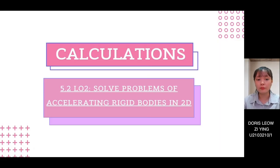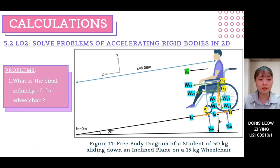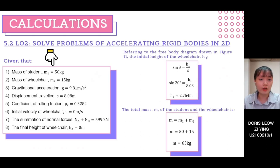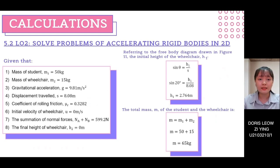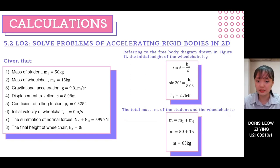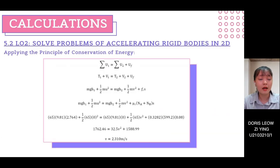Moving on to LO2, which is solving problems of accelerating rigid bodies in 2D, the problem is finding the final velocity of the wheelchair. The free body diagram is the same as in LO1. The coefficient of rolling friction, initial velocity, and summation of normal forces remain the same from LO1, and the final height of the wheelchair is 0.3 m. Applying the principle of conservation of energy, with initial height obtained by trigonometry and total mass of 65 kg, we obtain v equals 2.31 m/s, consistent with LO1.